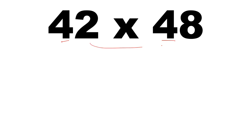If the numbers are such that their tens digits are the same and the unit digits have a sum of 10 — for example, 2 plus 8 is 10 — only such types of numbers we can multiply directly. There are two conditions: number one, the tens digit must be same, and number two, the sum of the unit digits must be 10.